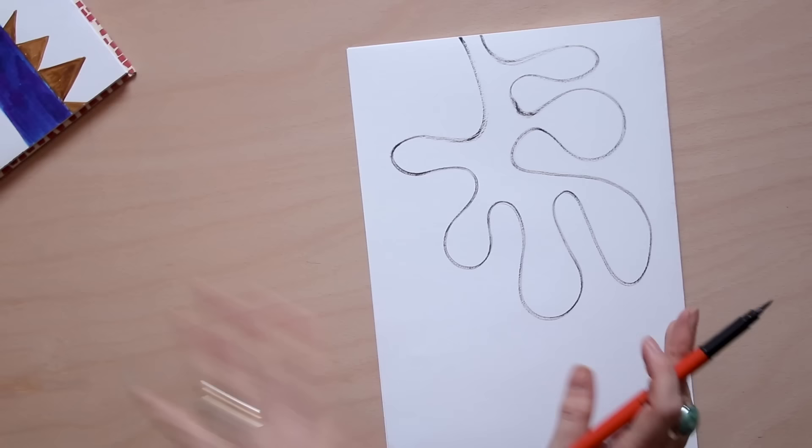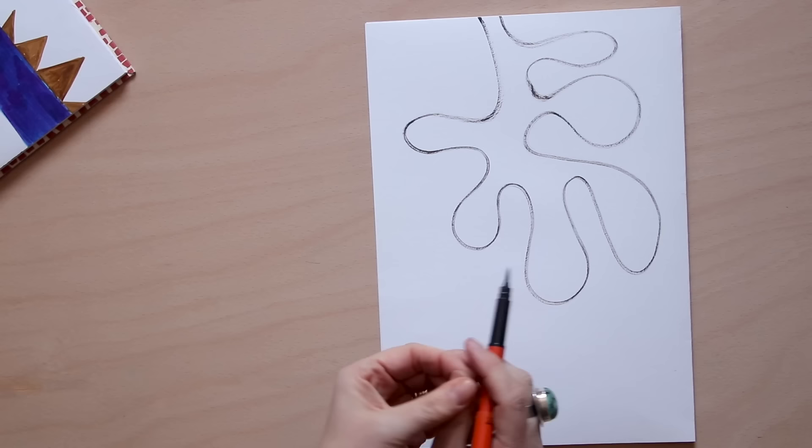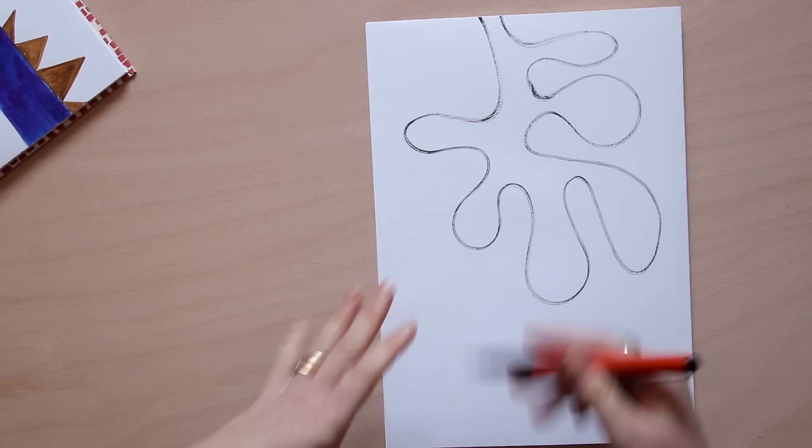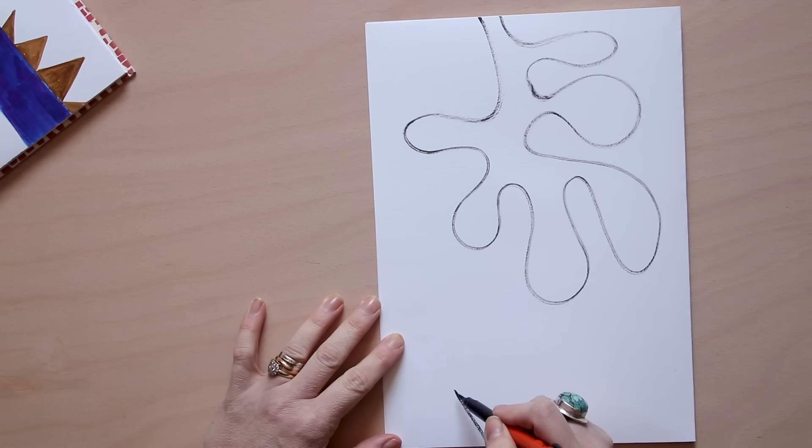The next shape I'm going to draw is a spiky shape. So in art, it can be useful to think of variety and difference and contrast and adding in things that are different to each other to create interest. So here I've got a curvy organic shape. So I'm going to add in a spiky shape right over the top.